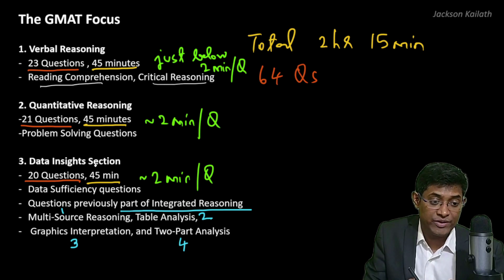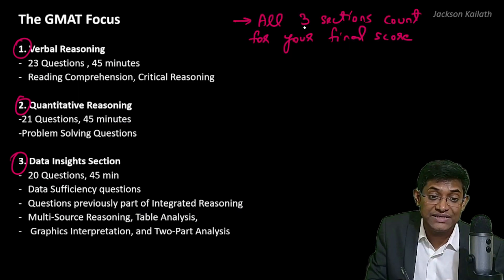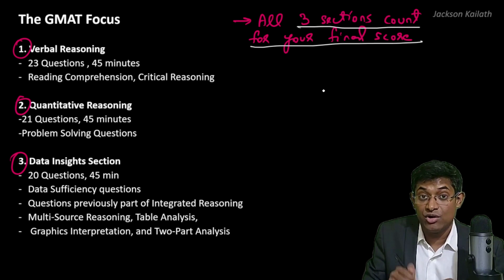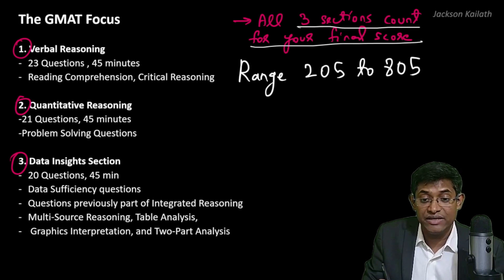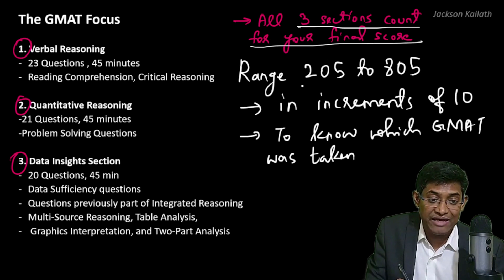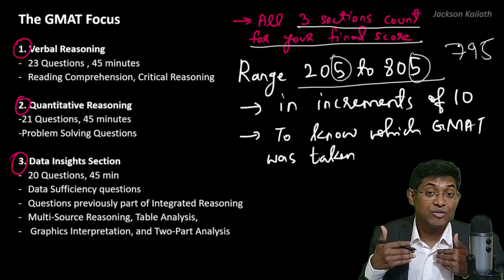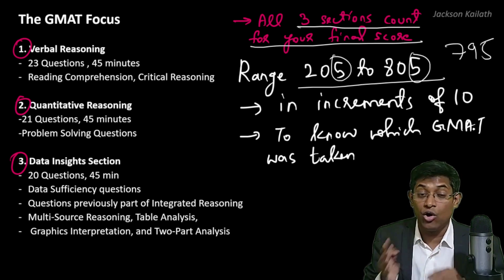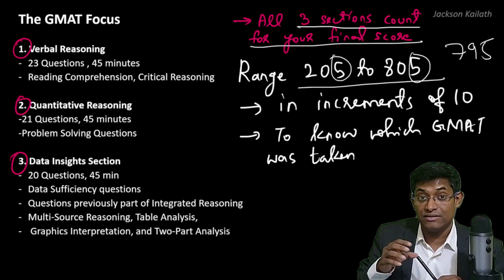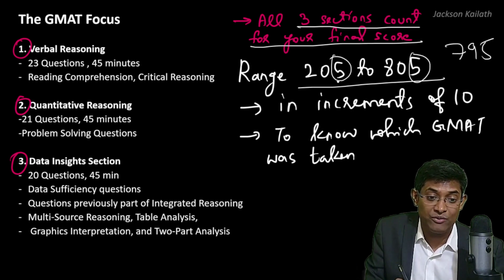All three sections count towards your final score on the GMAT Focus. The range of possible scores is between 205 and 805, and they move in increments of 10 points, meaning every score will have a 5 in the units digit. This is done so that schools can distinguish whether you have taken the traditional classical GMAT — where scores ended in zero, like 800 or 760 — or the GMAT Focus, where scores always end in 5.